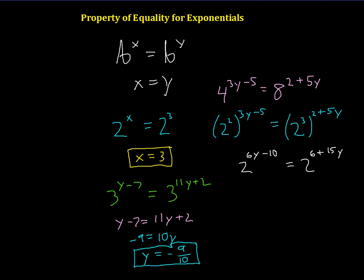And that's equal to 2 raised to the power of 3 times 2 plus 5y. So that's 6 plus 15y. And then we can go ahead and set the two exponents equal to each other. So 6y minus 10 equals 6 plus 15y. And that's a pretty nifty way to get things done.